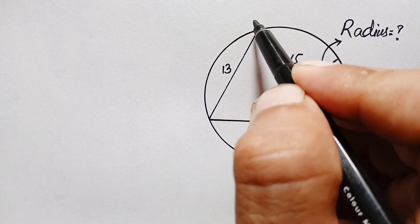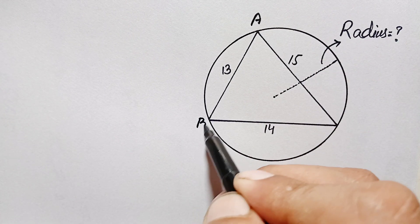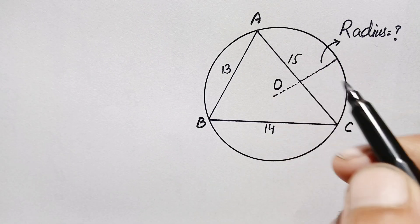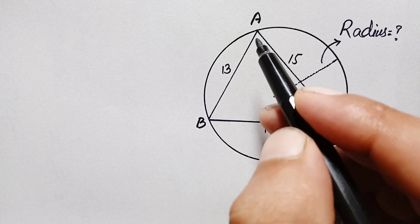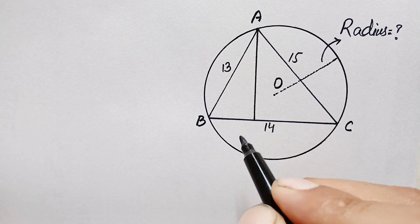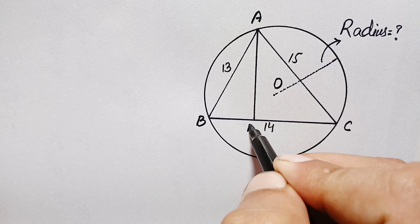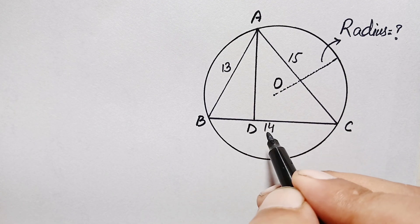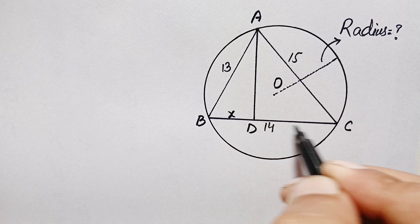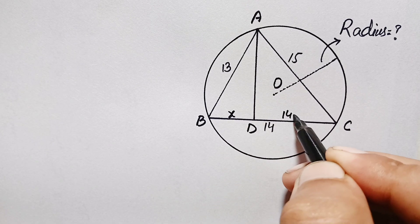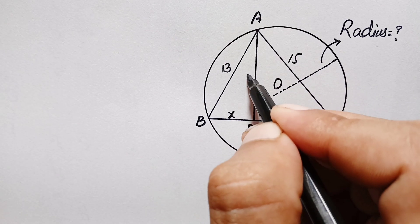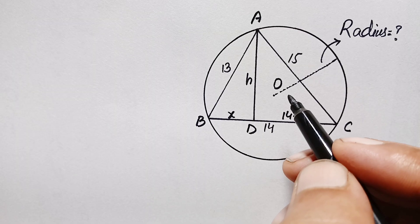First of all, let us suppose this is our triangle ABC and this is center O. We will draw a perpendicular from point A to side BC. Let us suppose this is point D. This total length BC is 40 units. Let us suppose this length BD is x units, so the remaining length DC will be 14 minus x units.